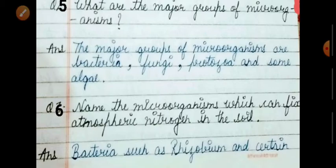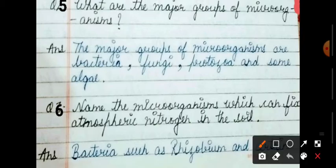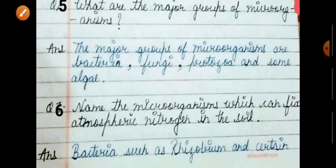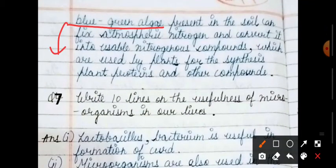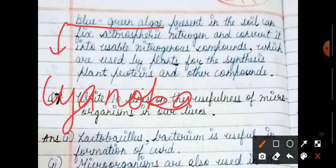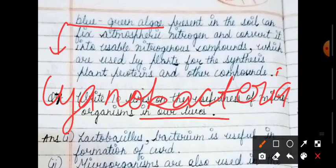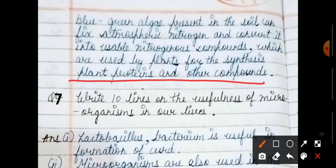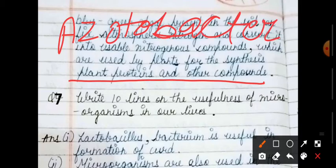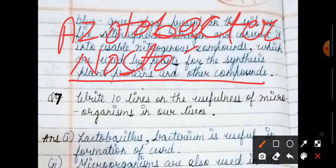Name the microorganism which can fix atmospheric nitrogen in the soil. It helps improve soil fertility. Blue green algae, also called cyanobacteria. They convert atmospheric nitrogen into useful products that plants can convert to protein. I will show you some other names here like azotobacter for nitrogen fixation and nostoc for nitrogen fixation.